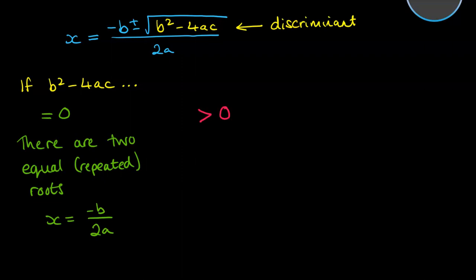Next consider if that discriminant was greater than zero. So if we had a positive number up here we would be able to square root it and we will get two separate roots. Now we can think a little bit more on this and think about whether that number came out to a perfect square or not. So what would happen if we square rooted it?